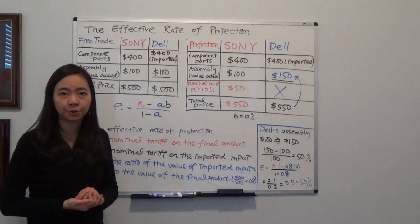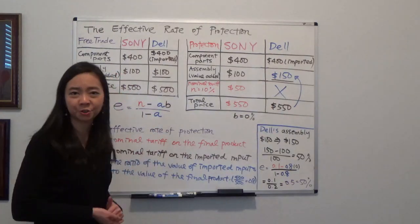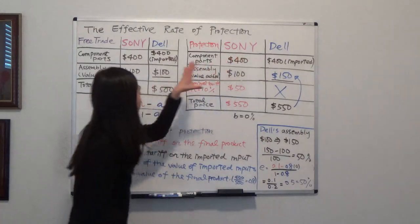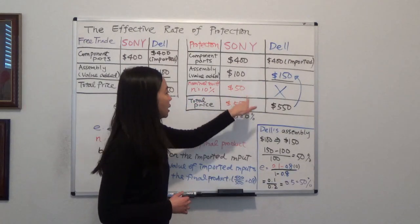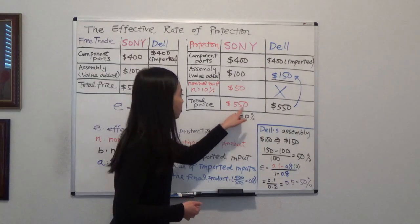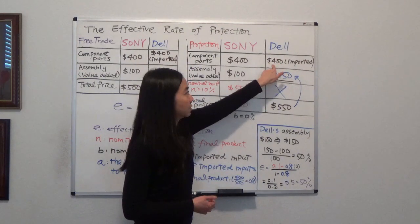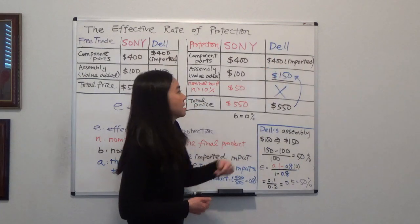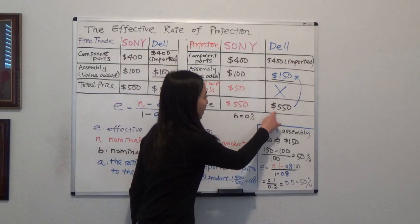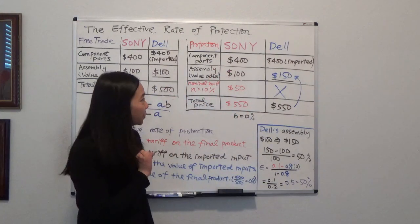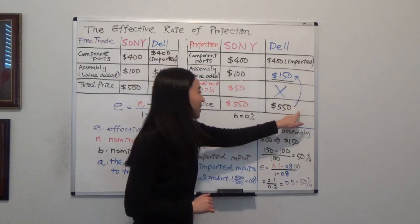Now suppose the government imposes a tariff on foreign computers and the nominal tariff is equal to 10%. What will happen to the price of a Sony computer? Initially the price of a Sony computer was $500. Now consumers will have to pay a 10% tariff, that's $50, so the price tag for a Sony computer will be $550. What about Dell? Dell imports the component parts at $400 — suppose this component is tariff-free. Dell only needs to make sure the final price is $550 to compete with Sony, so they only need to make sure their assembly is within $150.